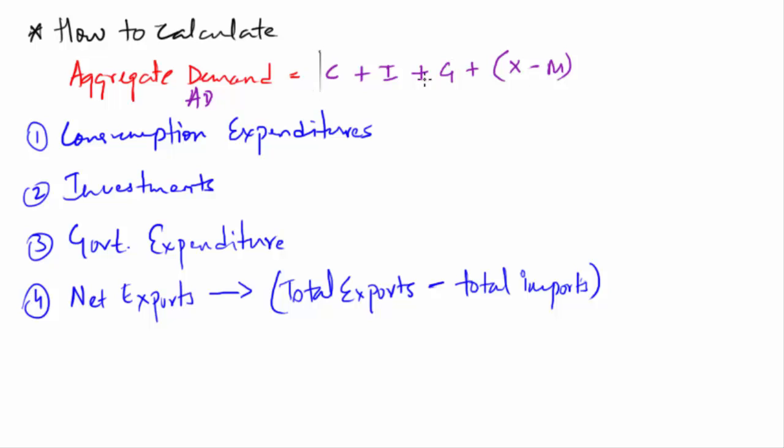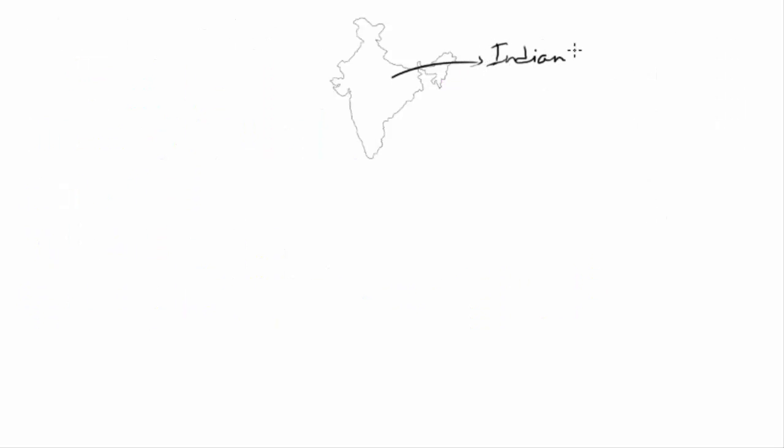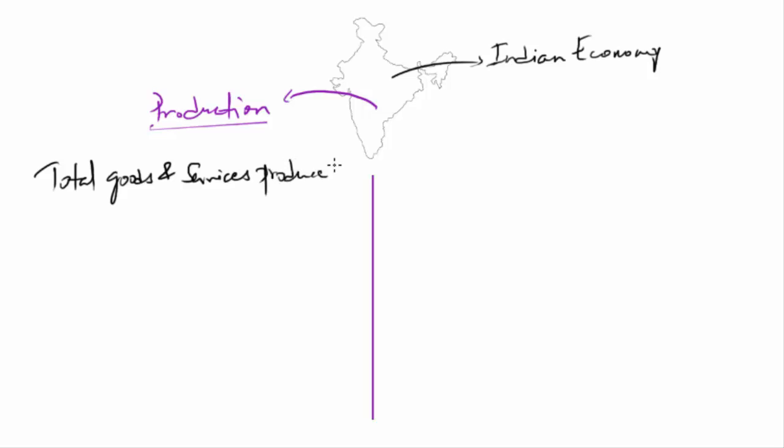And if you see all these components that form the aggregate demand are also the total value of goods and services produced in the economy. In much simpler terms if I have to explain, think of it this way. In the economy production takes place. Let's assume left side means total goods and services produced and on the right side we will have the consumers who will consume these goods and services.